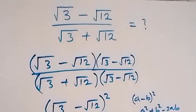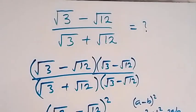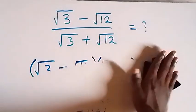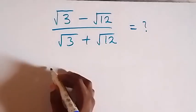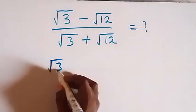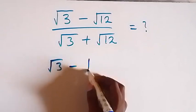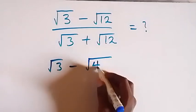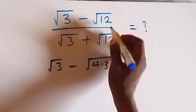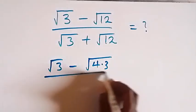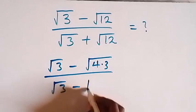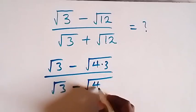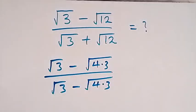Now we can use another way to solve this one. We can simply reduce this as √3 minus. We can reduce this as √3 minus √4 times √3.